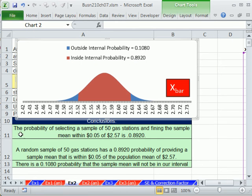A couple ways we could say this, the probability of selecting a sample of 50 gas stations and finding a sample mean within 5 cents of the population mean is 0.89. A random sample of 50 stations has a 0.89 probability of providing a sample mean that is within 5 cents of the population mean. Finally, of course, the outside the range, there is about 10 or 11% probability that the sample will not be in our interval.